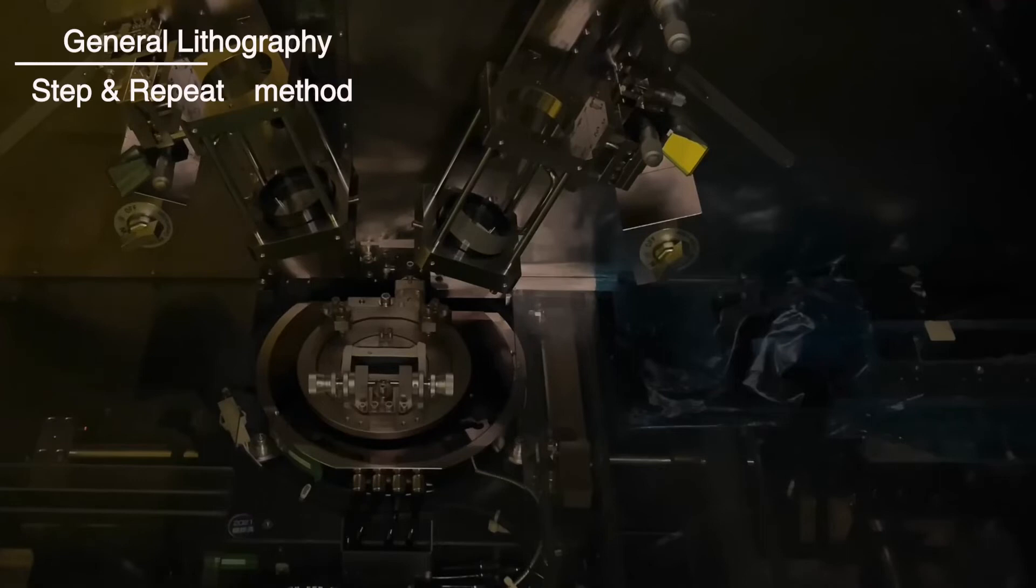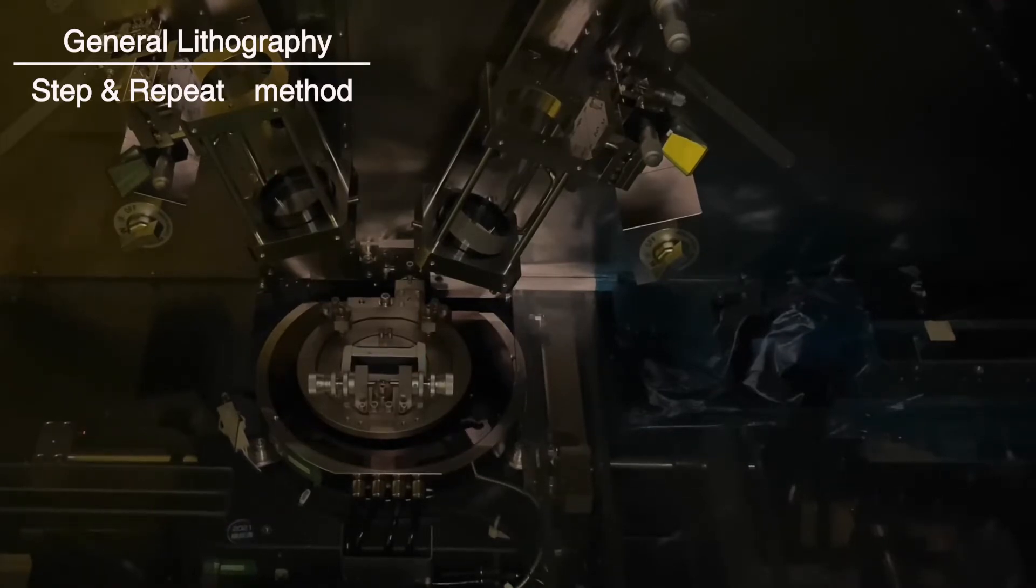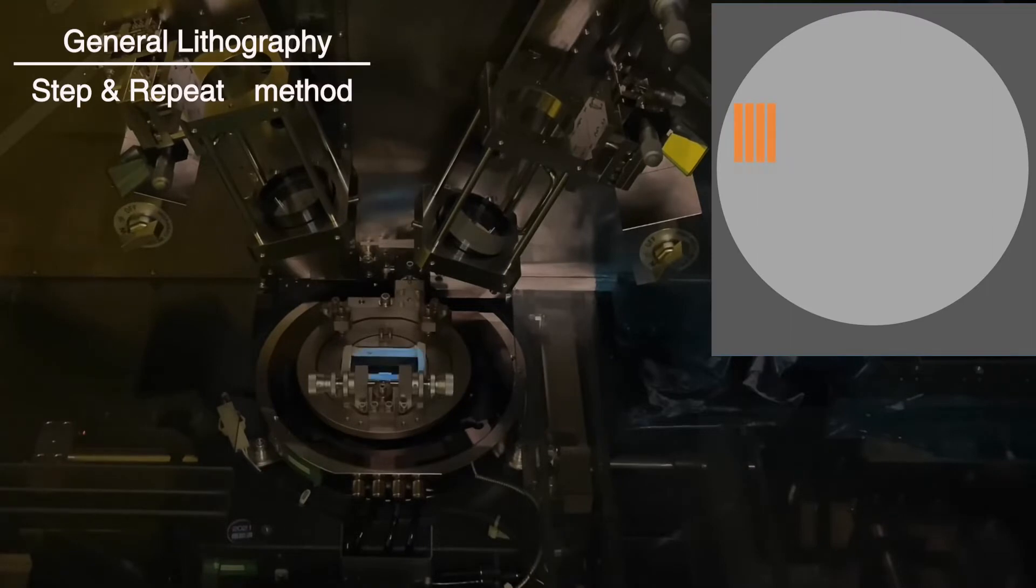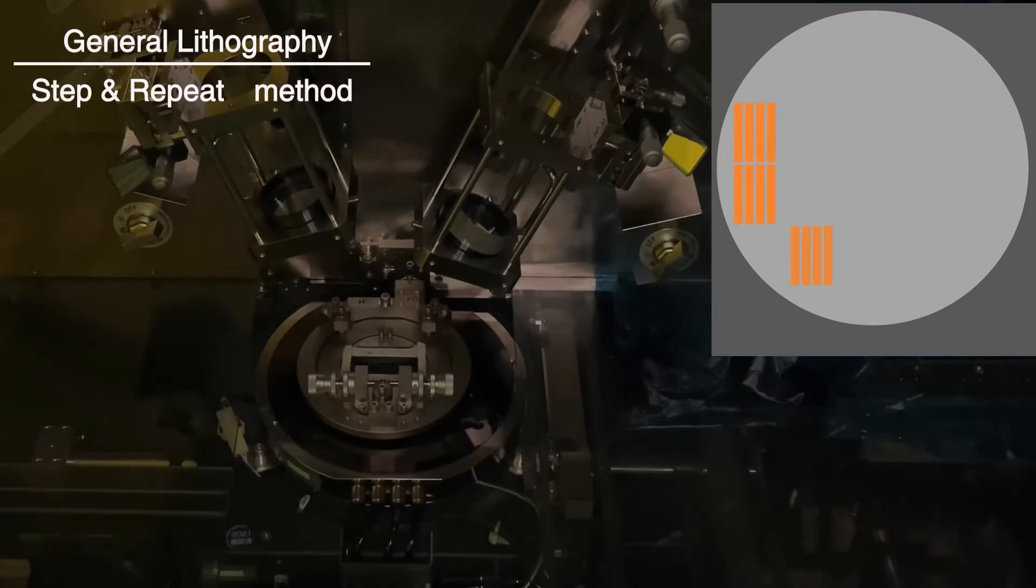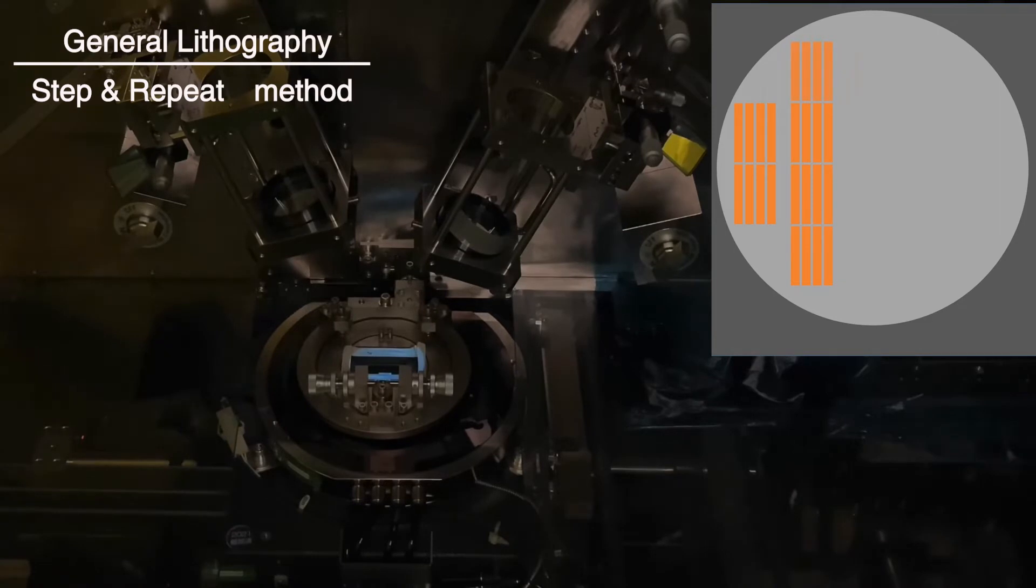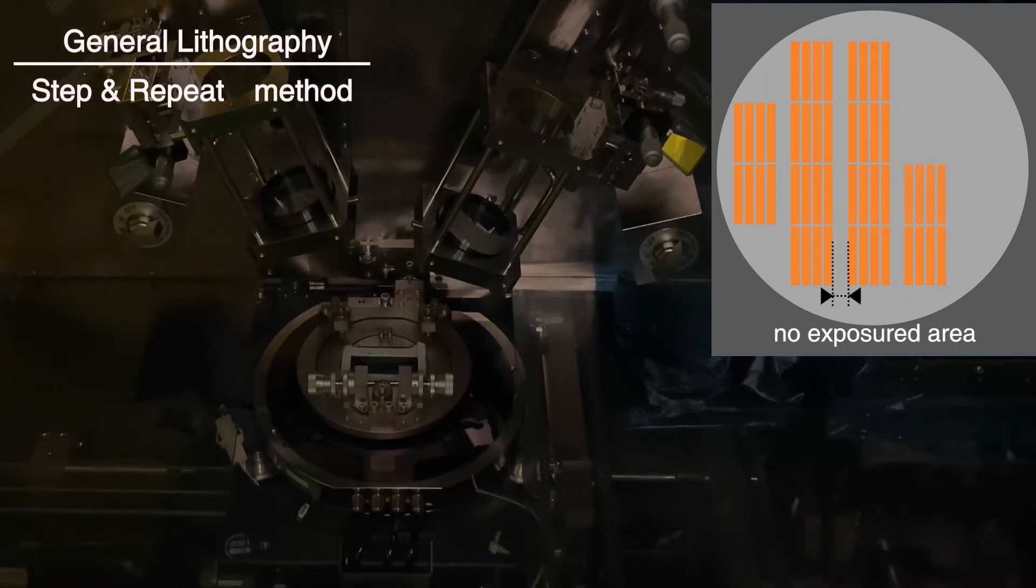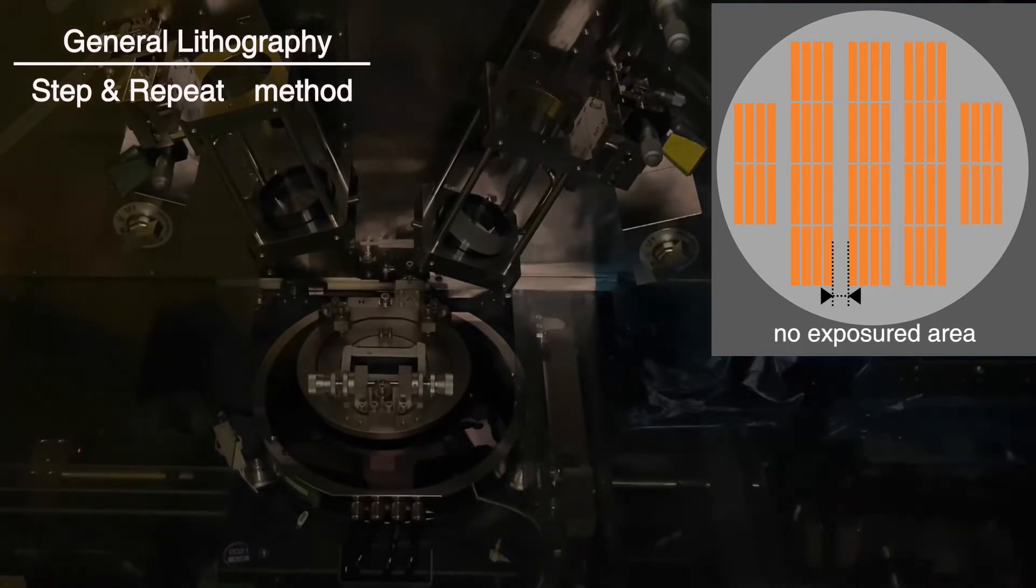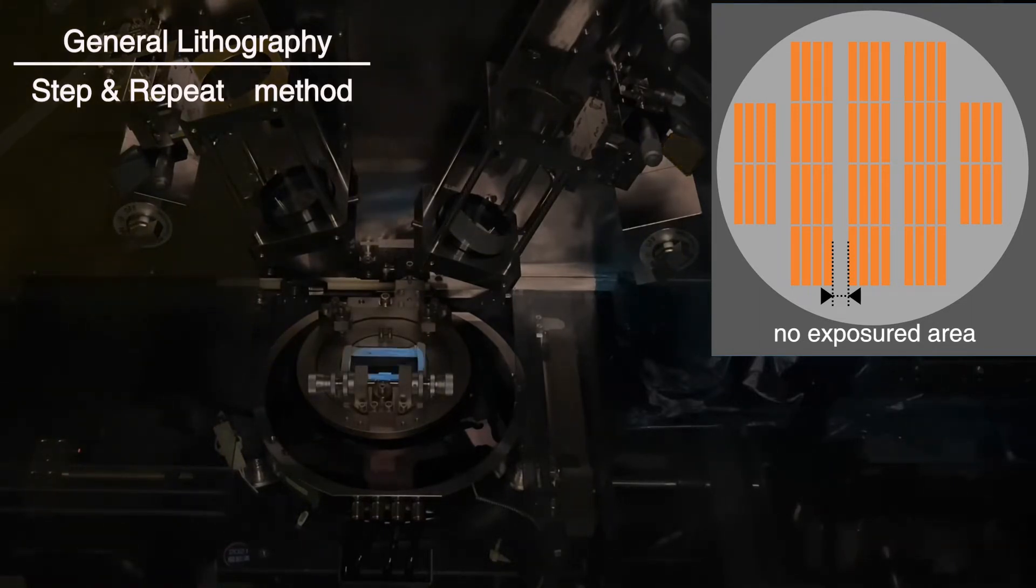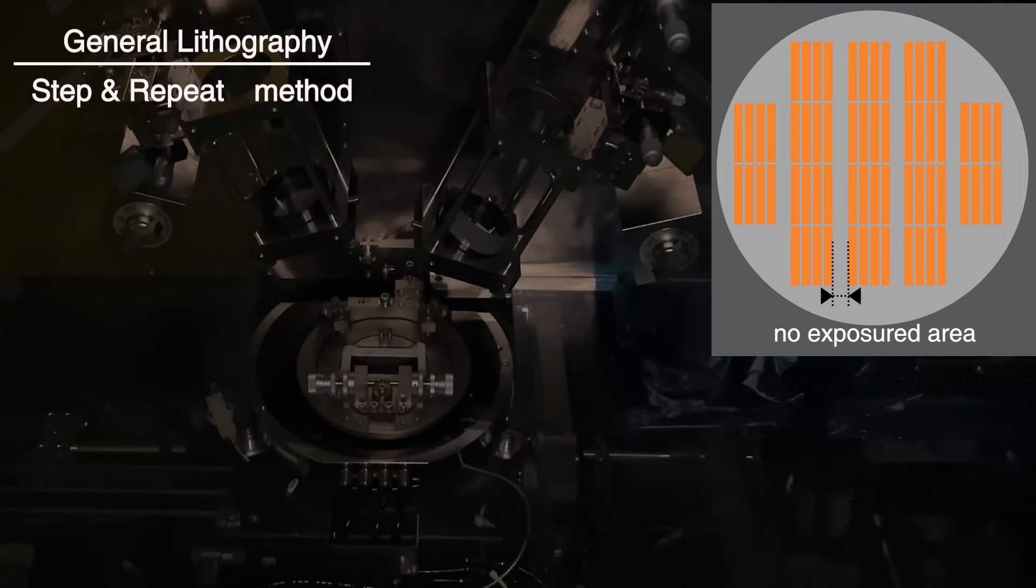In case of general interference lithography systems, the spot size is much smaller than the entire exposure area. So, step-and-repeat method is applied to cover the entire area. As a result, each irradiation area has no exposed area on the wafer. This non-exposure area sometimes creates problems for the quality of the optical components.